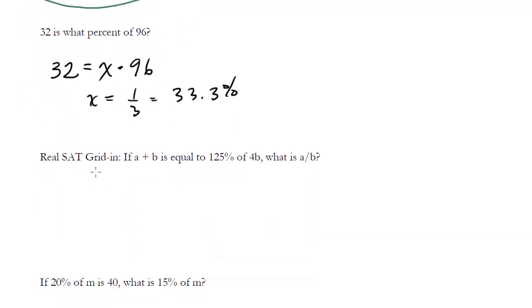How about this guy? This is a real SAT grid in. If a plus b is equal to 125 percent of 4b, what is a over b? It looks super crazy on the surface, but it's not too bad. So let's just translate, if a plus b is equal to, equals, 125 percent, now be careful, what is this as a decimal? We're moving the decimal over two spaces, so it becomes 1.25, of 4b, so times 4b. What is a over b? Well let's go ahead and just do the work here, so we get a plus b equals... actually wait, 1.25 times 4 is 5, so this is 5b. So subtracted b from both sides, I get a equals 4b.